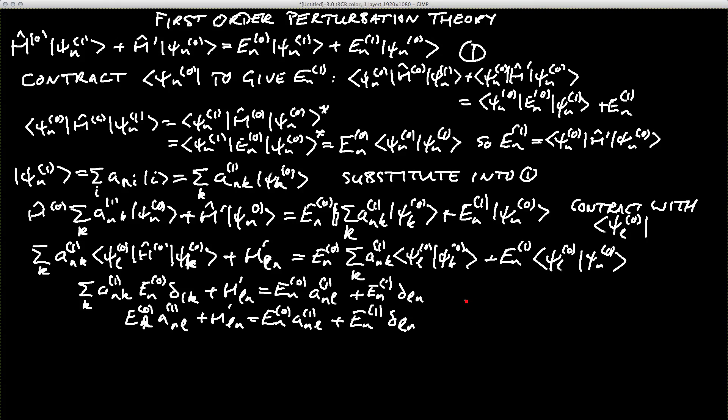There are two possible outcomes we have to consider. So the first one is when l is equal to n. When l is equal to n, then the first term on the left-hand side cancels with the first term on the right-hand side. And we get the formula that En of 1 is equal to the matrix element h prime nn. Now that's just what we derived up above here. Let me label that as equation 2, and I will say that that's equivalent to equation 2.